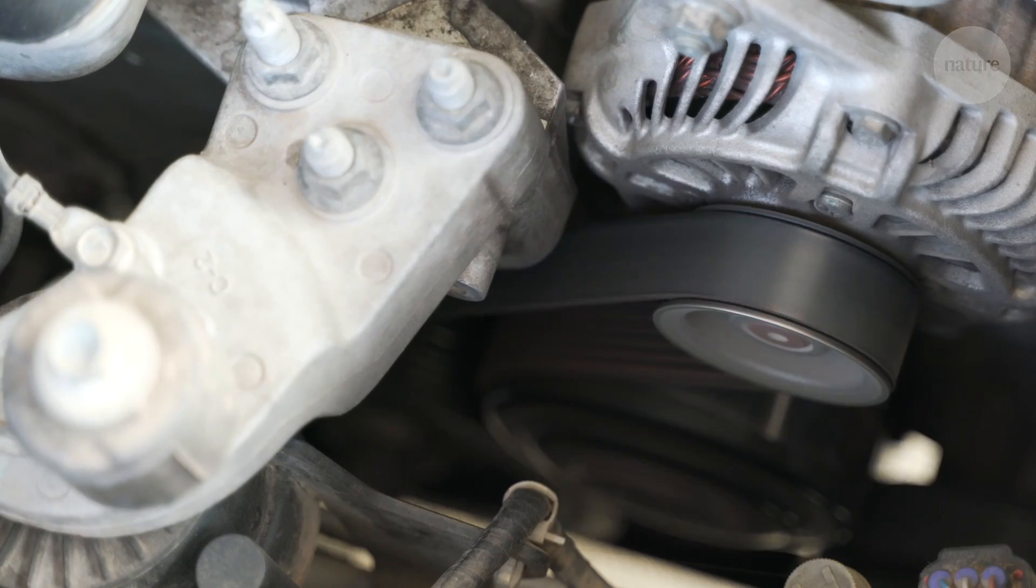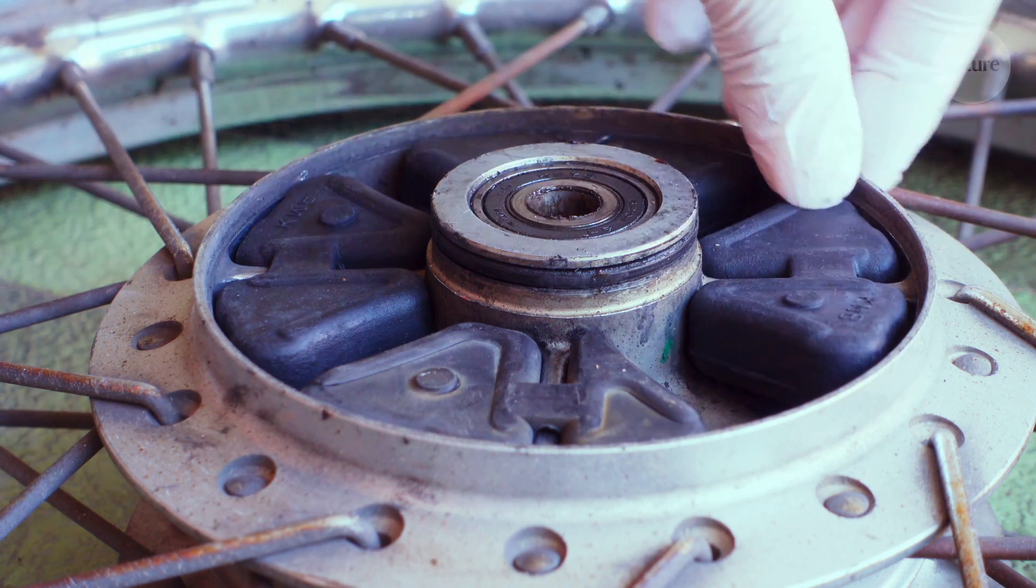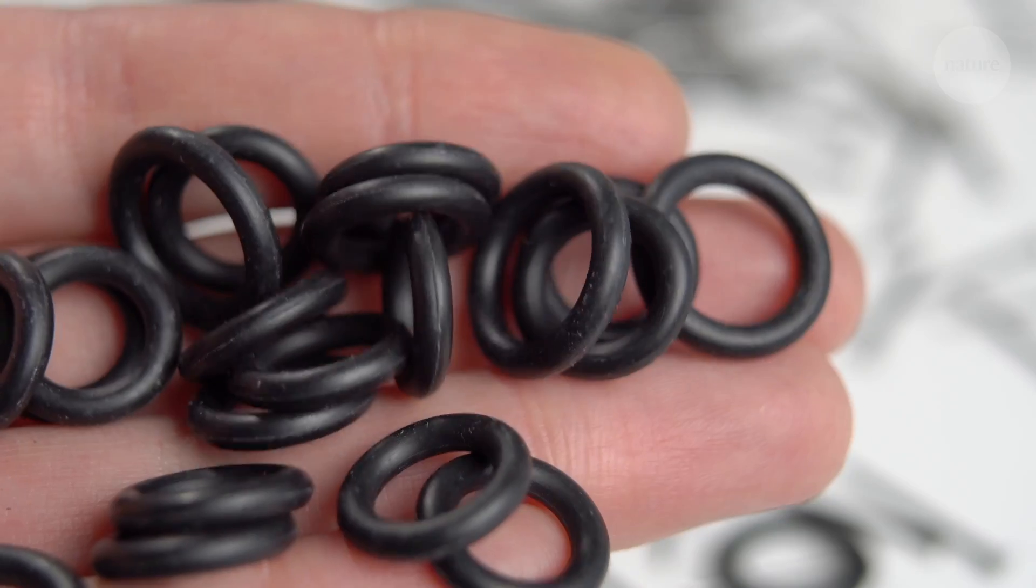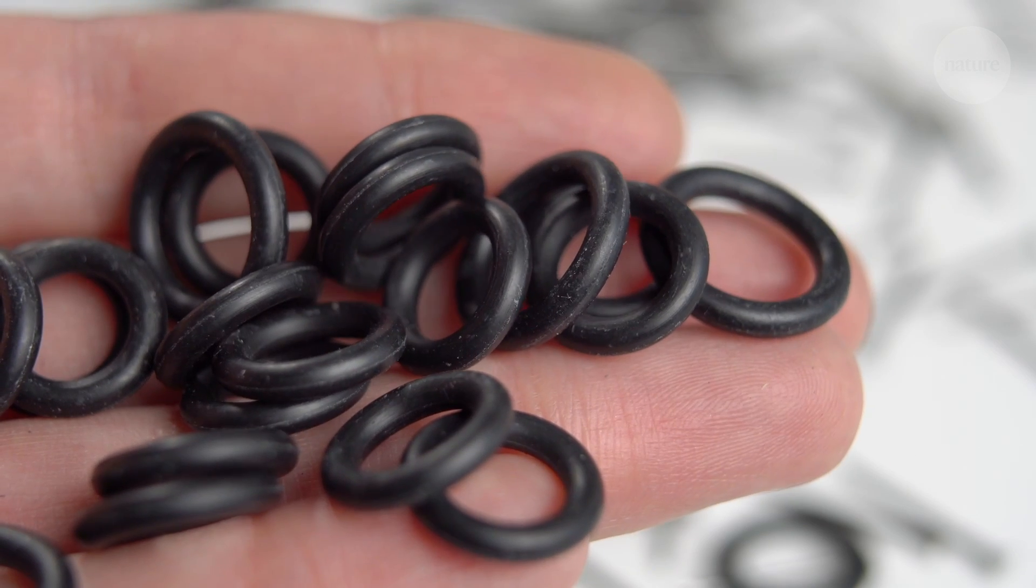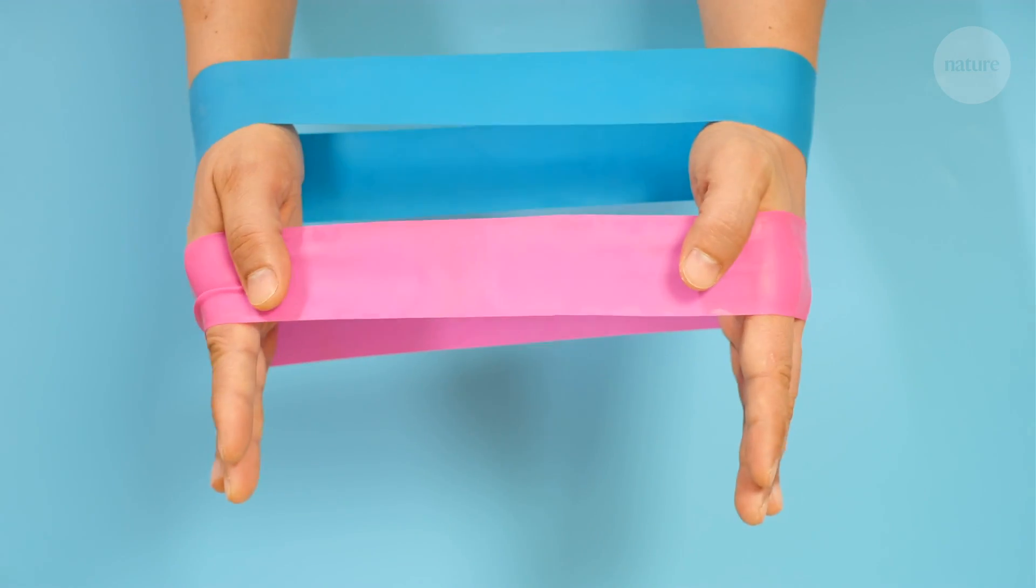Things like tires and belts and shock absorbers all need stiff rubber that can resist deformation. This material property is known as a high elastic modulus, while stretchier rubber would have a low modulus.